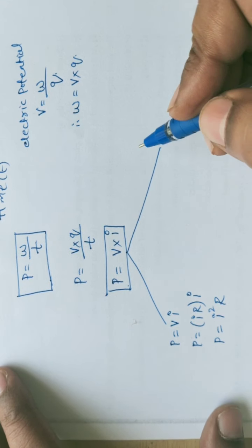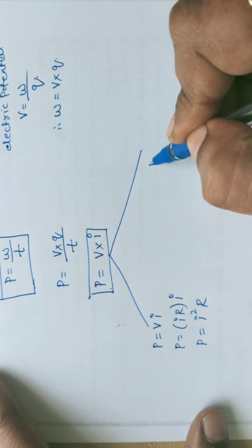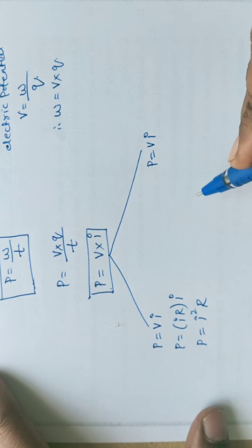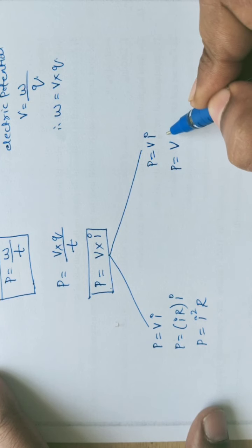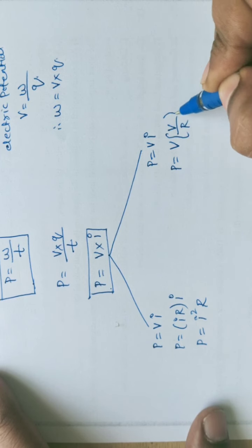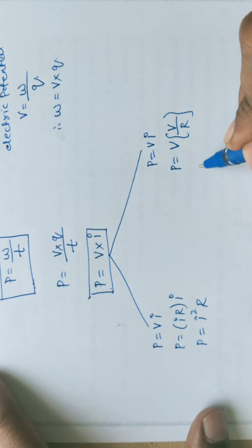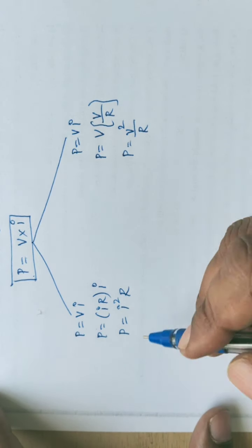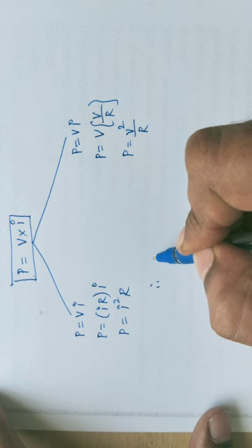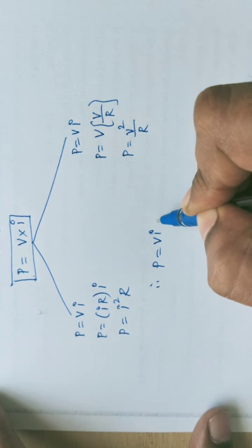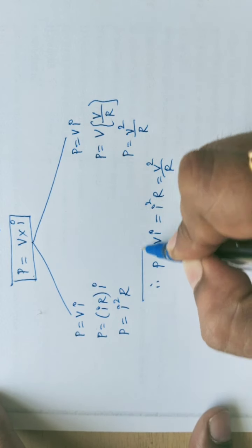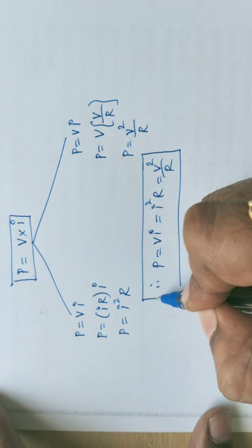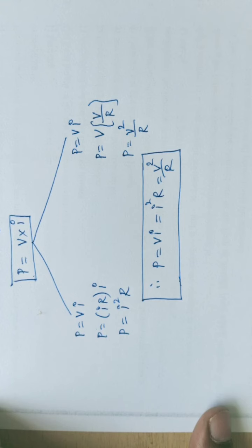For the third notation, from P equals V into I, substituting I equal to V by R using Ohm's law, we get P equals V squared by R. So overall we have three formulas: P equals VI, P equals I squared R, and P equals V squared by R. Based on these formulas, we can solve the maximum number of problems.